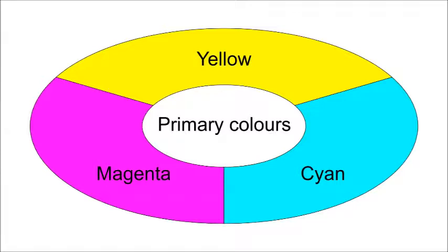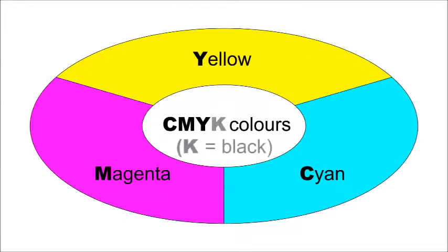When we are working with ink or paint, the primary colors are cyan, magenta, and yellow. These primary colors are an industry standard and they are called CMY colors. When printers also add black, the color set is called CMYK colors.